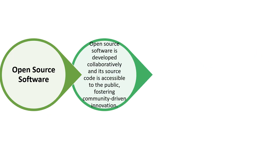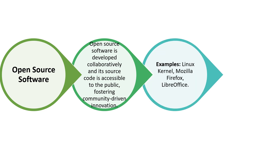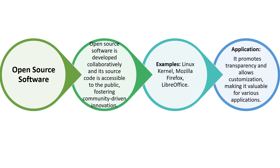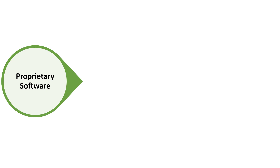Next is open source software. This is developed collaboratively and its source code is accessible to the public, driving community-driven innovation. Examples are the Linux kernel, Mozilla Firefox, and LibreOffice. Open source software promotes transparency and allows customization, making it valuable for various applications.